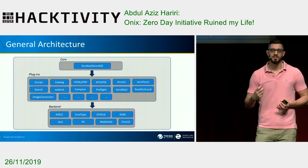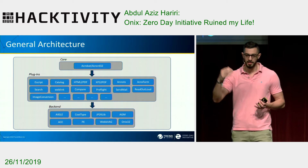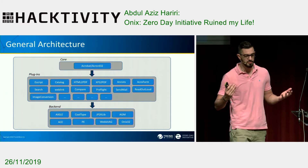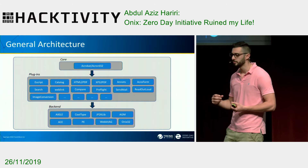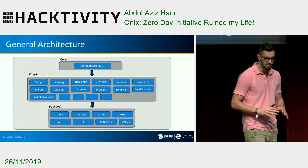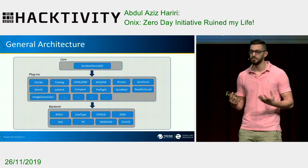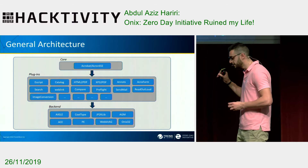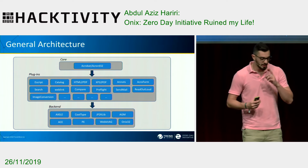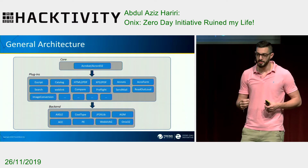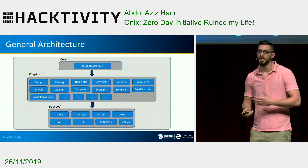Acrobat supports plugins. If you go inside your program files Acrobat directory, you're going to see a directory called plugins. Plugins are just simple DLLs, but they don't have a .dll extension — they have a .api extension. Every plugin represents different components. For example, eScript is responsible for all the JavaScript stuff. Catalog deals with combining PDFs together and creating indexes for searching purposes. HTML2PDF converts HTML files to PDF and relies on WebKit AG — an old WebKit engine inside Acrobat that's still vulnerable to a lot of old WebKit bugs.